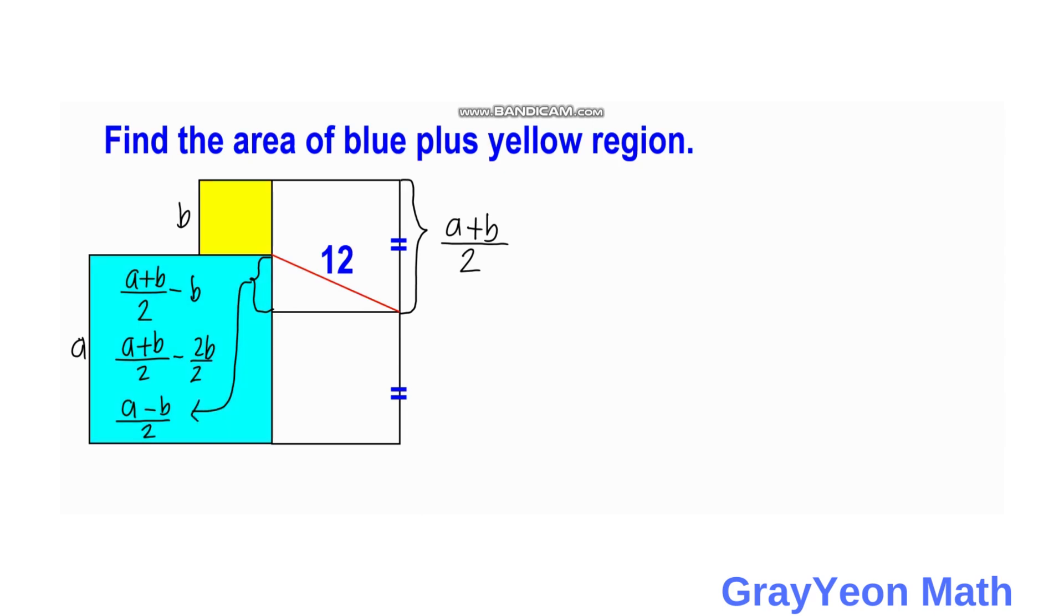And since this white portion is a square, then this should be also A plus B over 2. And now we actually form a right triangle here which has a hypotenuse of 12.